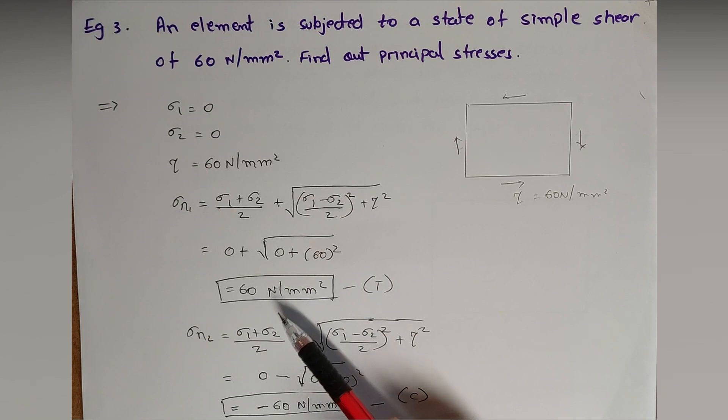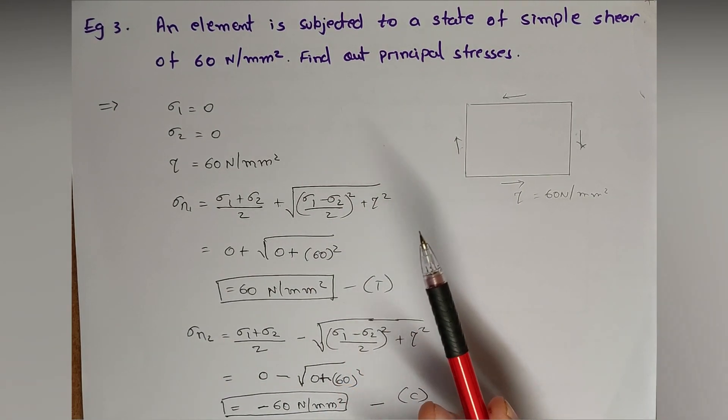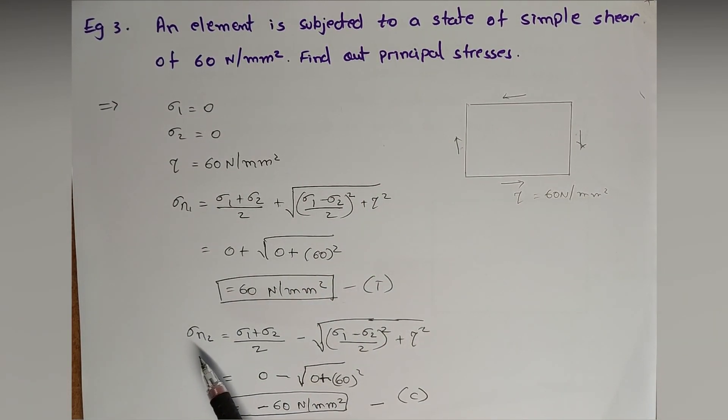Regarding minor principal stress, Sigma one plus Sigma two by two, zero. This minus, Sigma one minus Sigma two, nothing matters. Only thing is tau square.